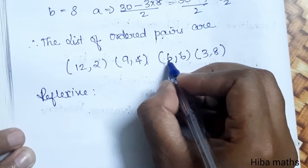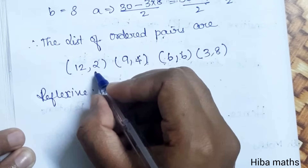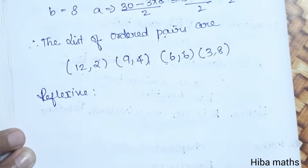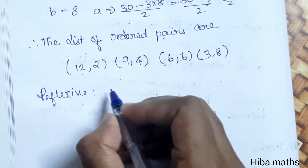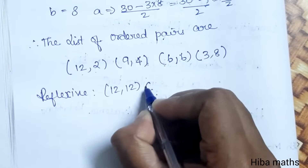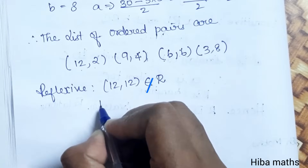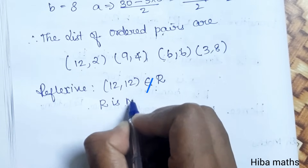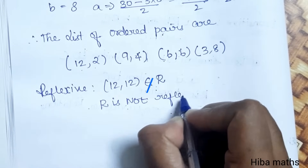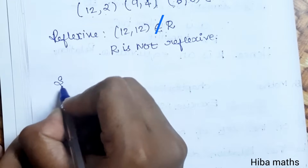First, we check reflexive. For R to be reflexive, (a, a) must be in R. For example, (12, 12) is not in R. Therefore R is not reflexive.